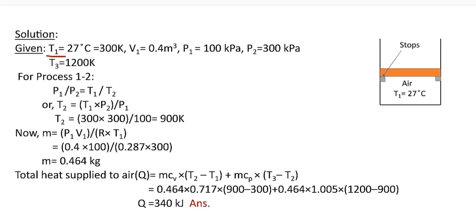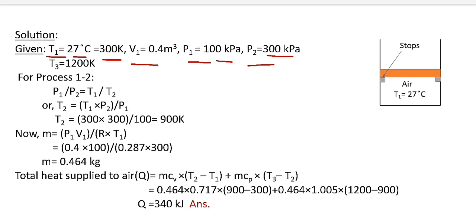Here T1 is initial temperature of air which is 27 degrees Celsius, or 300 Kelvin. V1 is initial volume of air which is 0.4 meter cube. P1 is initial pressure of air which is 100 kPa, and P2 is pressure required to lift the piston, which is equal to 300 kPa.